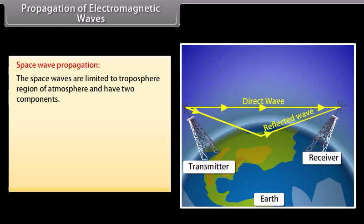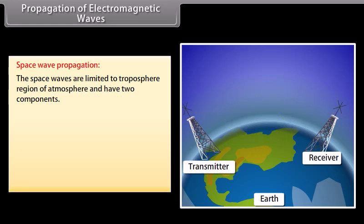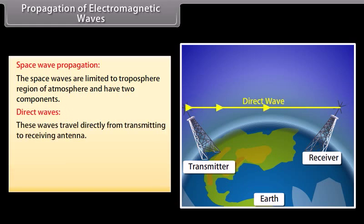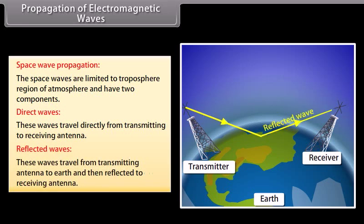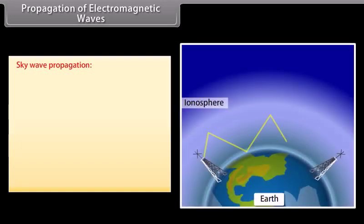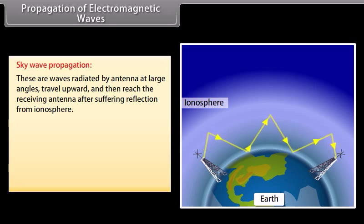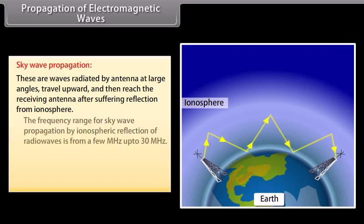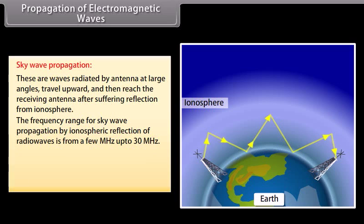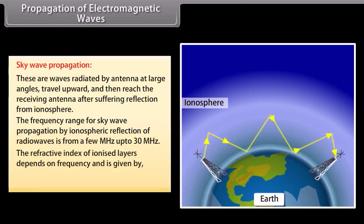Space wave propagation: Space waves are limited to the troposphere region of the atmosphere and have two components. Direct waves travel directly from the transmitting to the receiving antenna. Reflected waves travel from the transmitting antenna to the Earth and are then reflected to the receiving antenna. Sky wave propagation: These are waves radiated by an antenna at large angles, traveling upward and then reaching the receiving antenna after suffering reflection from the ionosphere. The frequency range for sky wave propagation is from a few megahertz up to 30 MHz. The refractive index of ionized layers depends on frequency and is given by: n = √(1 − 81/F²).